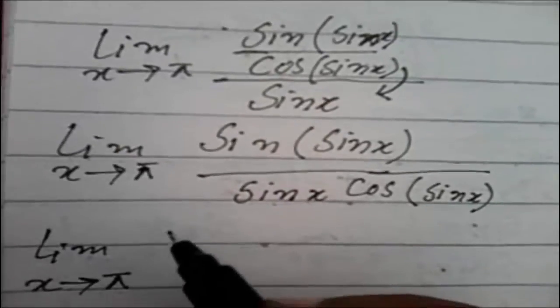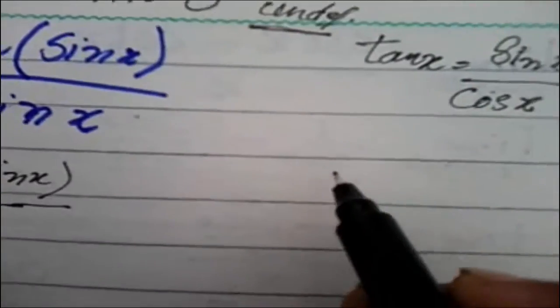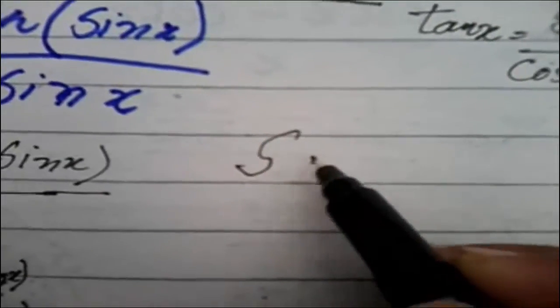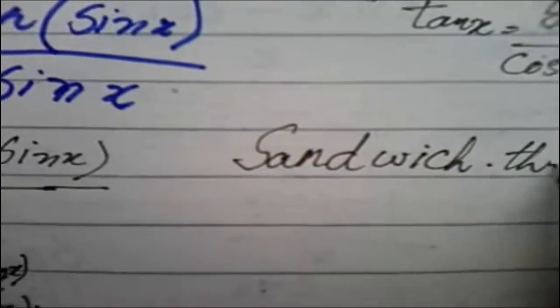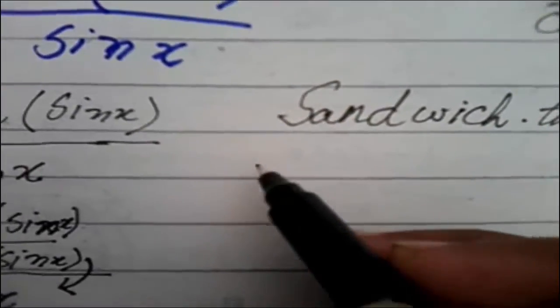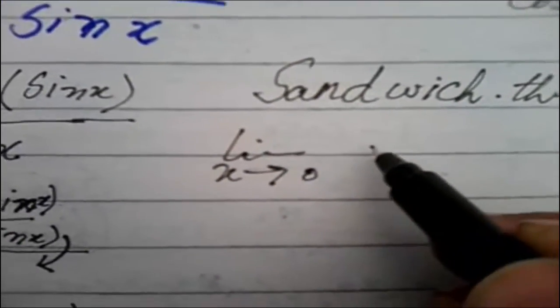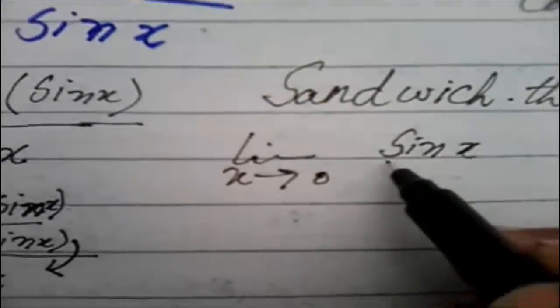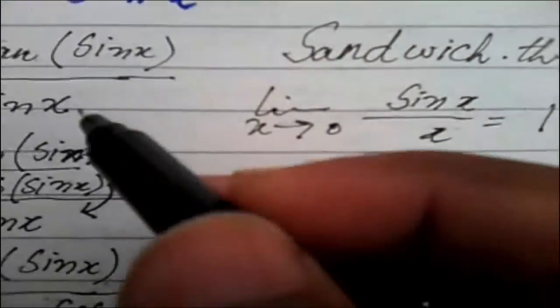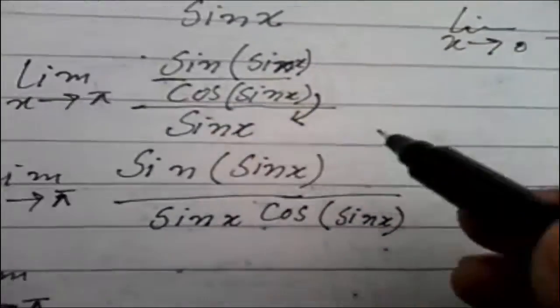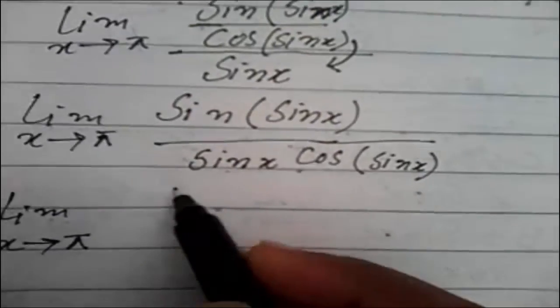Okay, do you know about sandwich theorem? In my last video I described this sandwich theorem. Mathematicians say that limit... here and here we can write it one, okay? We can write it one. So sin(x) over x - we're going to separate it.